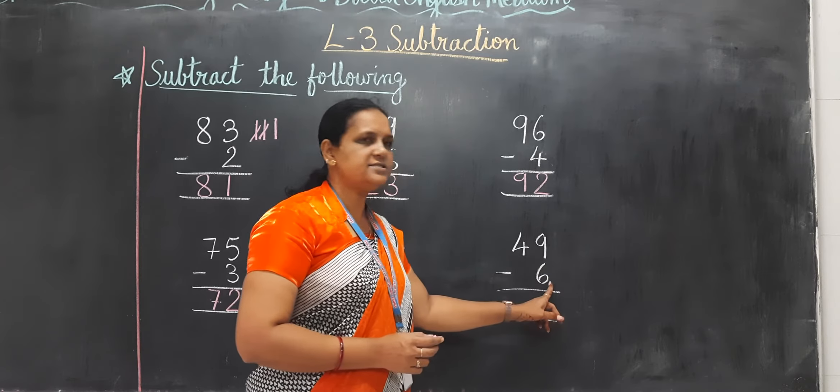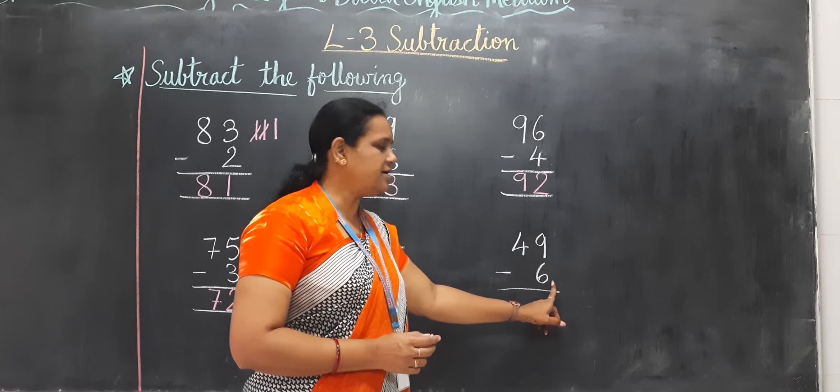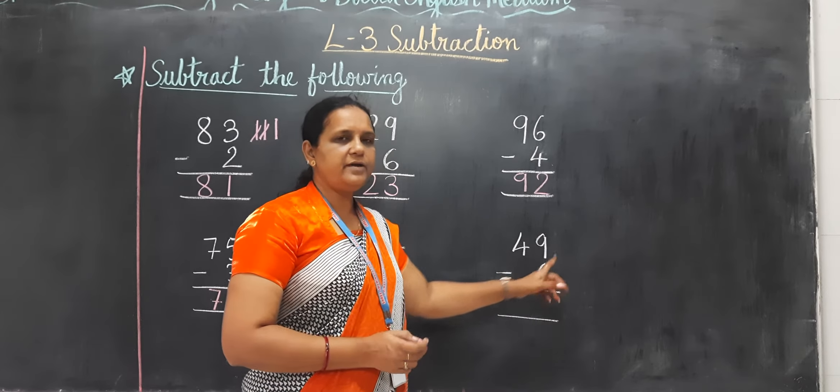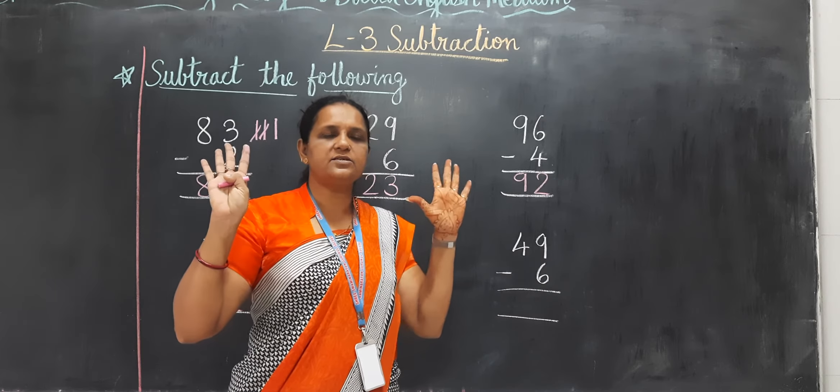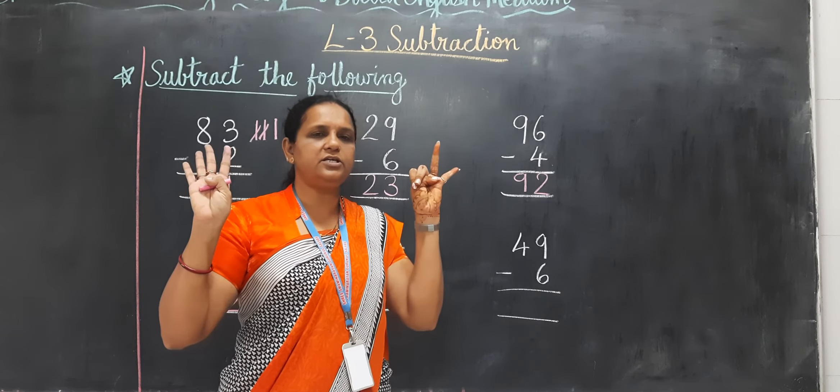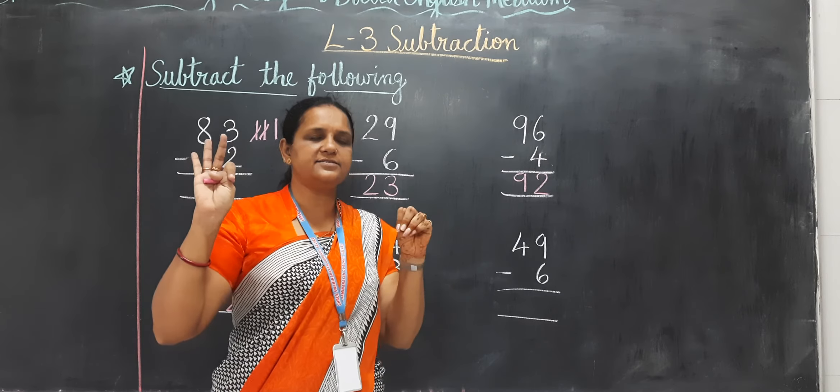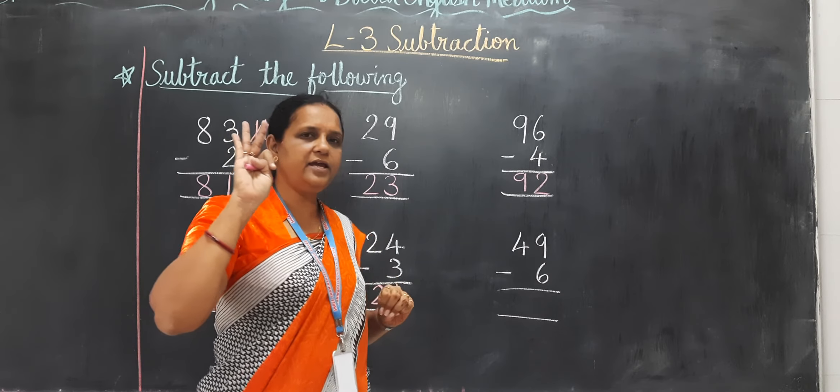Again, 9 minus 6. 9 minus 6, how much? Yes, you have to count. 1, 2, 3, 4, 5, 6. Now how many fingers remain? 3.